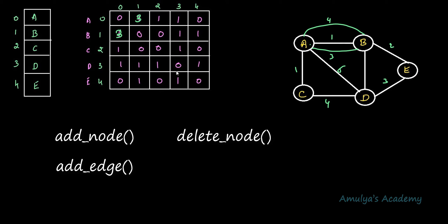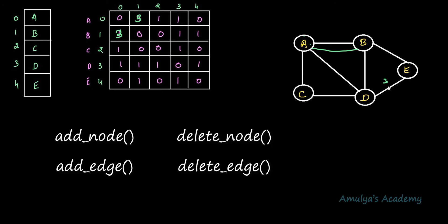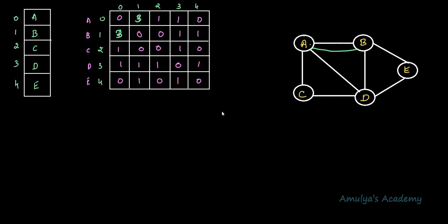For the delete node function, no changes are needed, because when we delete a node we delete all edges connected to it — it doesn't matter whether there are multiple edges or just one. But in the delete edge function, you need to decrement the counter. For example, if A to B has three edges and you delete one edge in an unweighted graph, you decrement the count to 2. So this is about adjacency matrix representation. Next, let's talk about adjacency list representation.